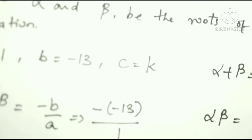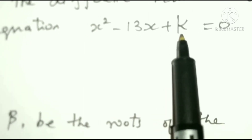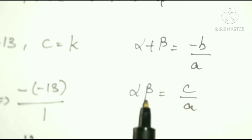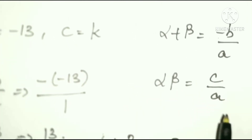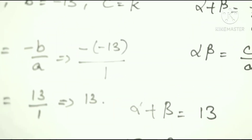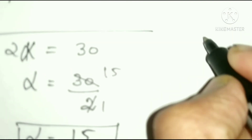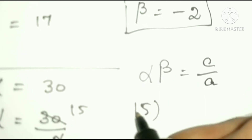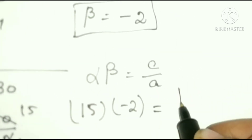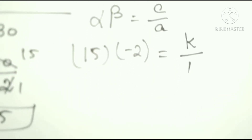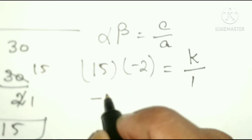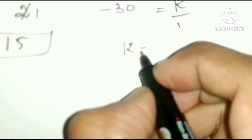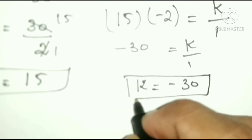Now we use the product of the roots formula: alpha into beta equals c by a. Here c is k and a is 1. Substituting, 15 into minus 2 equals k by 1. Multiplying gives minus 30 equals k. So k equals minus 30.